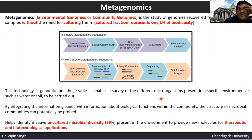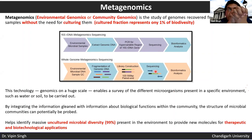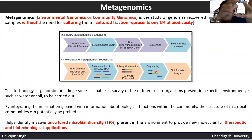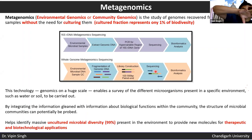Metagenomics enables surveying of different microorganisms present in a specific environment such as water or soil. You can also identify community relationships — for example, if type A bacteria represent 90% versus type B bacteria, you know the dominant population. This allows identification of functional relationships between communities in a given ecosystem.